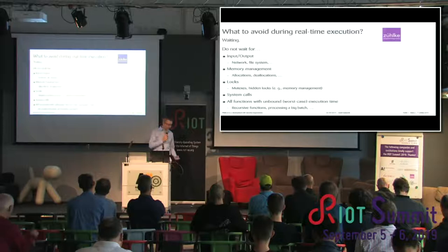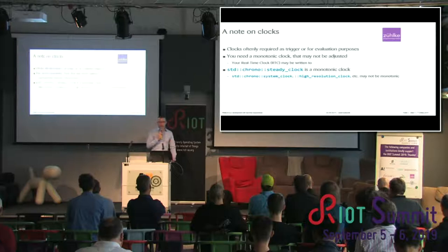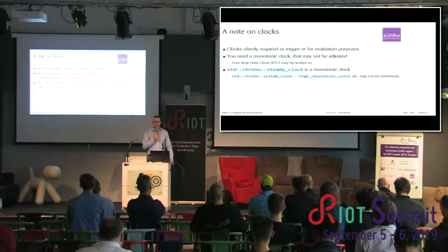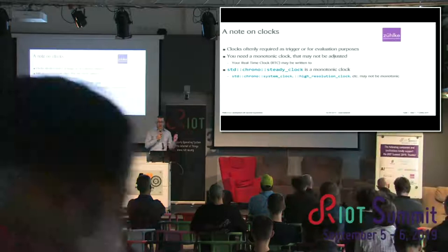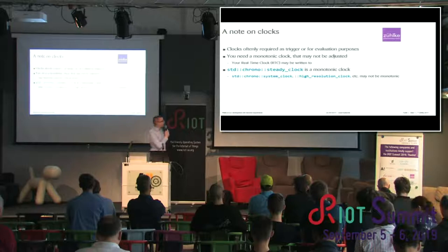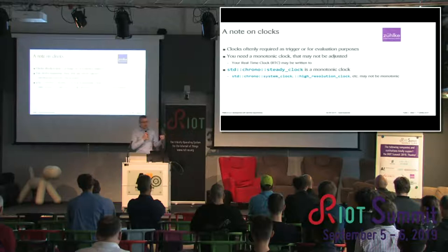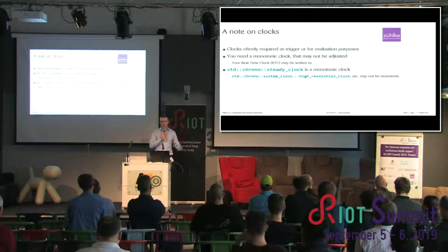Let me slide in a note about clocks. Clocks are often required as a trigger — like a periodic trigger — or for evaluation purposes. You will need a monotonic clock that may not be adjusted, meaning it won't compensate for clock drift or accommodate leap seconds, because that would screw your real-time. This also applies to the real-time clock (RTC), which may be written to for drift adjustment. In C++, the steady_clock is definitely a monotonic clock and is fine for real-time execution. Other clocks like system_clock or high_resolution_clock may not be monotonic, so just use steady_clock.